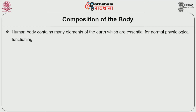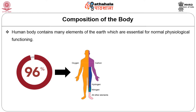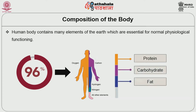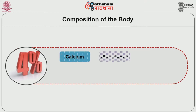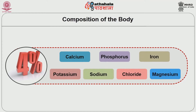The human body contains many elements of the earth which are essential for normal physiological functioning. About 96% of the human body consists of 4 elements: Carbon, Hydrogen, Oxygen and Nitrogen in combinations. These 4 elements form the basis for structural components namely Protein, Carbohydrate, Fat and Water. The remaining 4% is composed of minerals like Calcium, Phosphorus, Iron, Potassium, Sodium, Chloride and Magnesium.